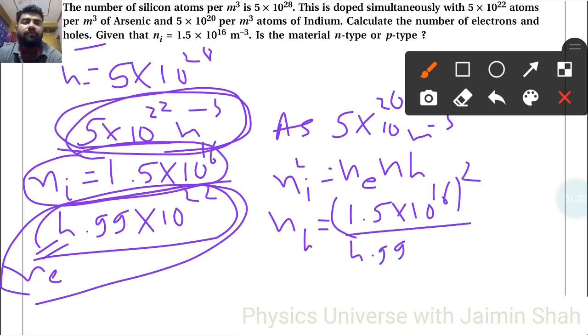This equals 1.5×1.5 divided by 4.99, which is 0.450×10¹⁰.